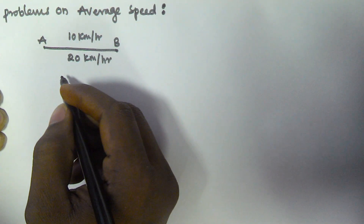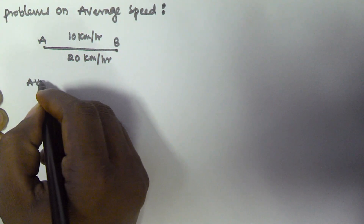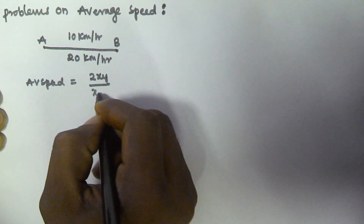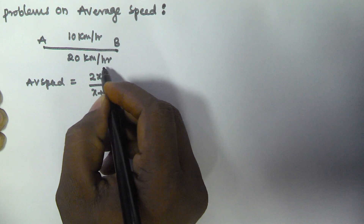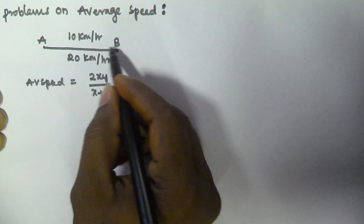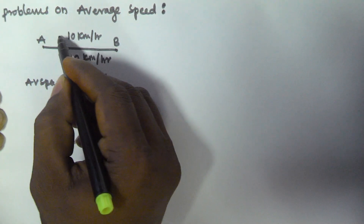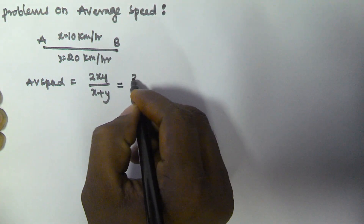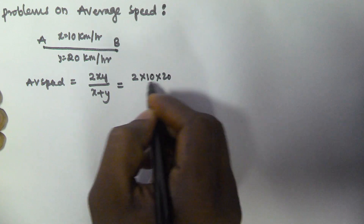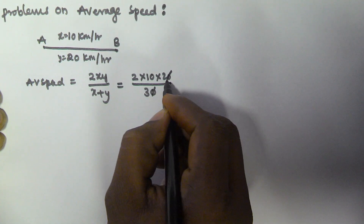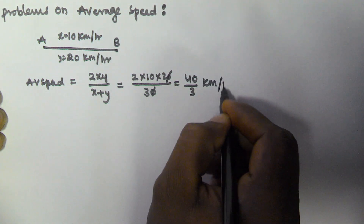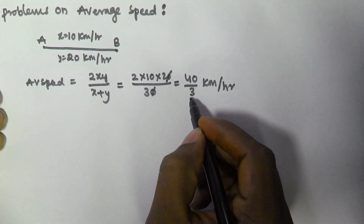In the previous video I showed that the average speed is given by 2xy divided by x plus y, where x is the speed from A to B and y is the speed from B to A. In our case x is 10 and y is 20. Substituting: 2 × 10 × 20 divided by (10 + 20) = 400/30, which gives 40/3 km per hour. That is the average speed.